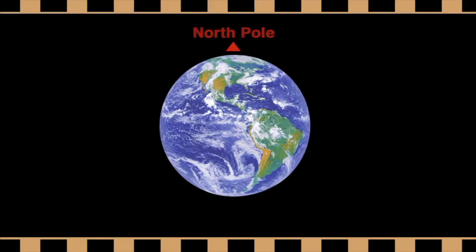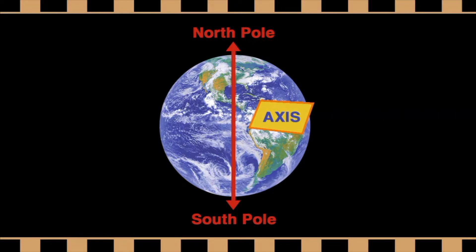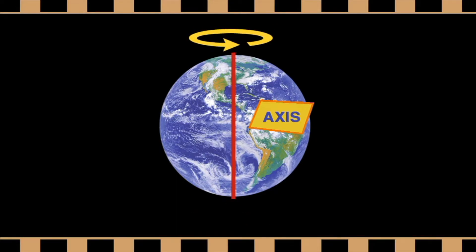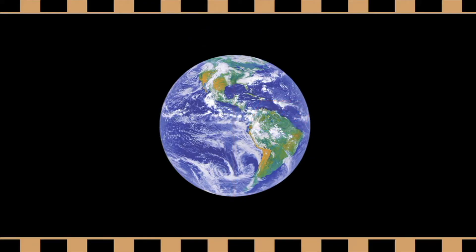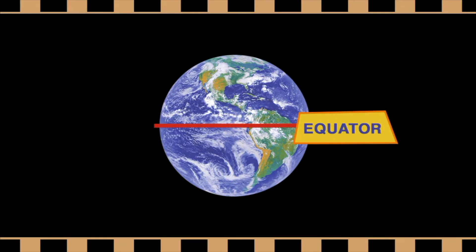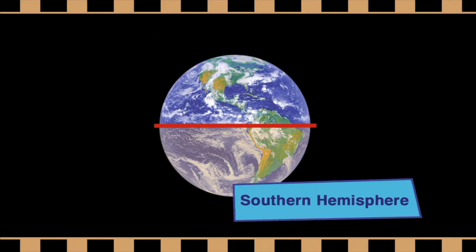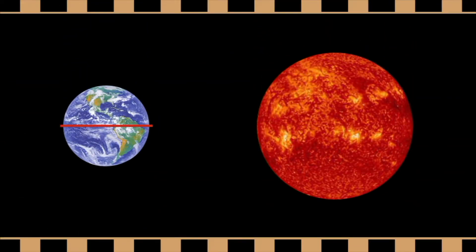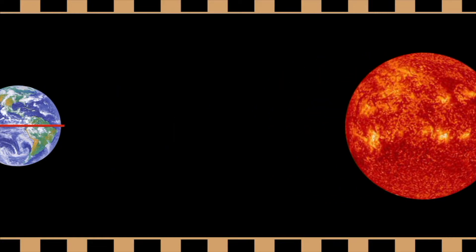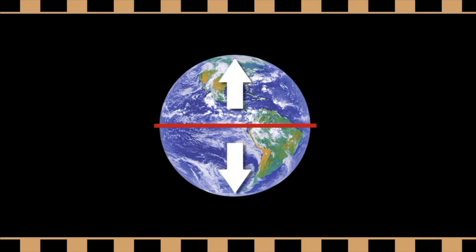At the top of the earth is the north pole, and the bottom of the earth is the south pole. There is an imaginary line called the axis that goes through the north pole through the earth to the south pole. The earth spins, or rotates, on its axis. In the middle of the earth, there is another imaginary line called the equator. The equator divides the earth into two halves called the northern hemisphere and the southern hemisphere. The equator is always facing the sun directly. This is why places around the equator never get very cold. The further away from the equator you get, the colder it gets.